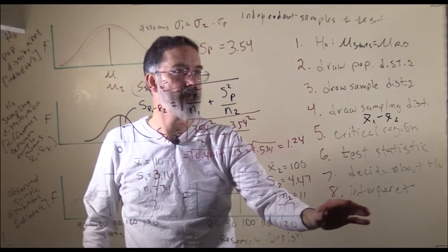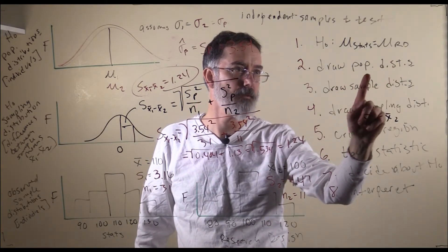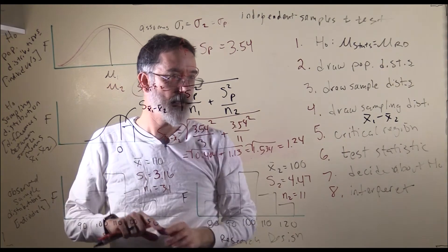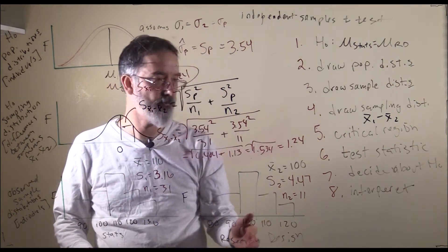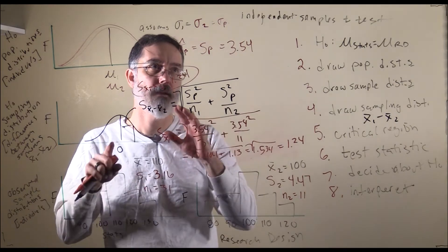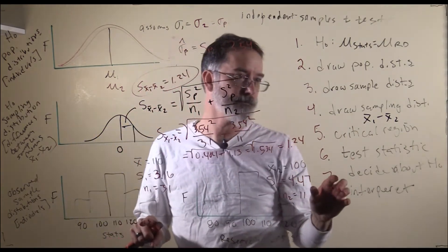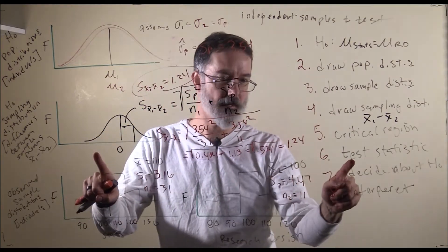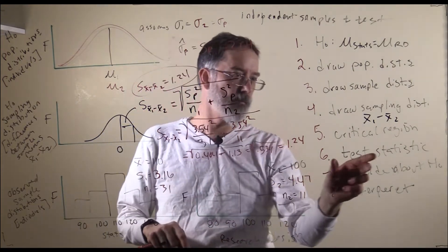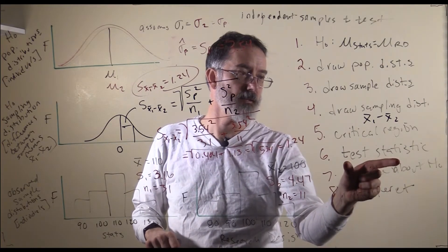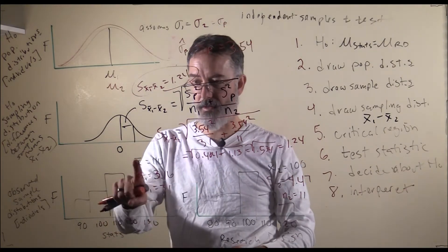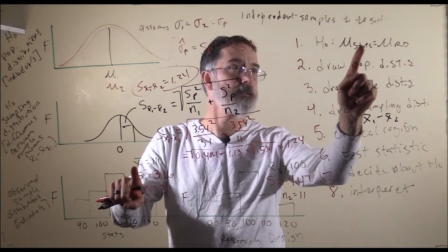Going through the rest of the steps: we have drawn the population distributions, sample distributions, and the sampling distribution is now complete. The critical regions would be placed on the distribution, and we add our degrees of freedom from each group to get 40 total. We go to the t-table for a two-tail test with alpha of 0.05 to find the critical values. We then calculate our test statistic, which would be 110 minus 100 divided by 1.24, and if it exceeds the critical values we reject the null hypothesis and conclude that stats exams are easier than research design exams.